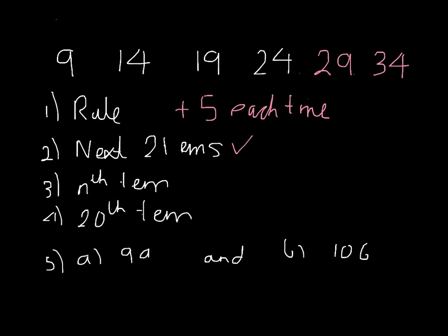The nth term, well, this is going up in 5. So we write the 5 times tables: 5, 10, 15, 20, 25, and 30, and the nth term of that is 5n. Now, our sequence is 4 bigger, so the nth term is 5n plus 4.